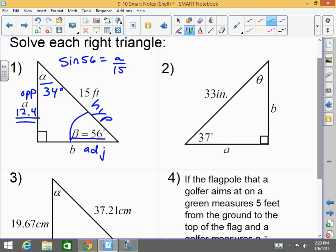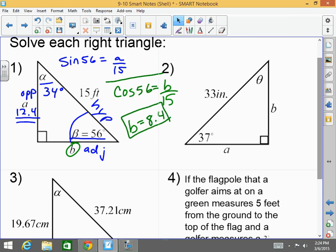What trig function would I use to solve B coming from angle 56, angle beta? You could use tangent, but remember what I told you. You don't want to use values that you've already found because you could have messed up. So let's use cosine. Cosine of 56 equals adjacent, which is B, over hypotenuse. So the cosine of 56 times 15 equals 8.38, 8, so 8.4. Does that make sense, gentlemen? Promise?